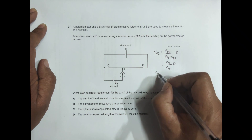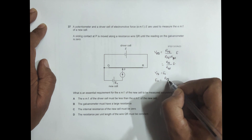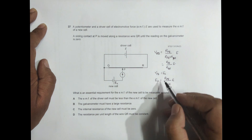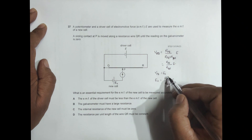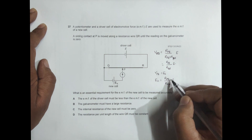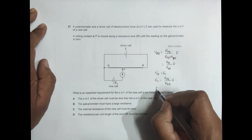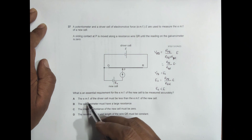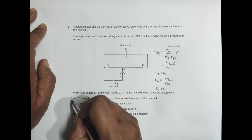When the galvanometer reads zero, V_PQ must equal EN, so EN equals (R_PQ / R_QR) × E. Since PQ is less than QR, this ratio is always less than 1, meaning EN must be less than E. Option A states the driver cell EMF must be less than the new cell EMF — that is the opposite of what we derived, so Option A is incorrect.